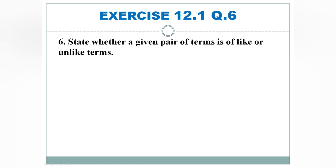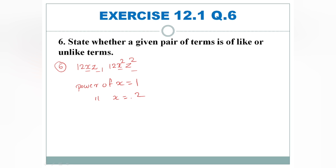The sixth pair is 12xz and 12x squared z squared. The variables are the same but the power of x is 1 in the first case and 2 in the second. Same variables but different powers, so these are unlike terms.